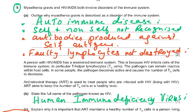Question 5 asks about myasthenia gravis and HIV/AIDS, both involving disorders of the immune system. The question asks us to outline why myasthenia gravis is described as a disorder of the immune system. It is an autoimmune disease because self and non-self are not recognized, and antibodies are produced against self-antigens.